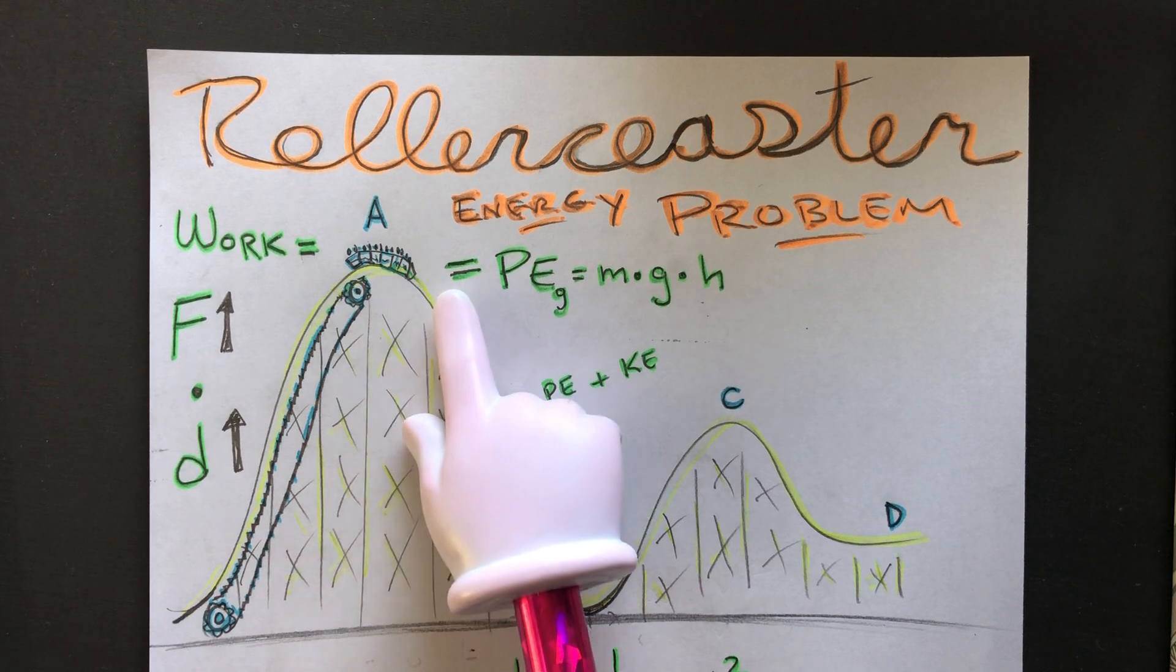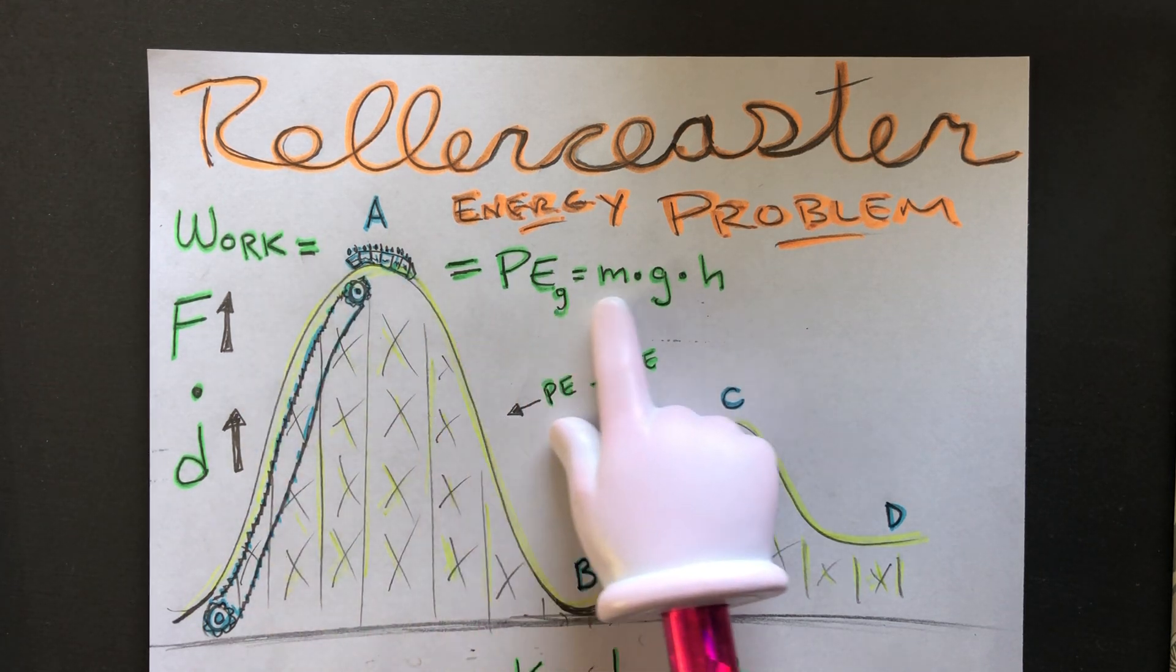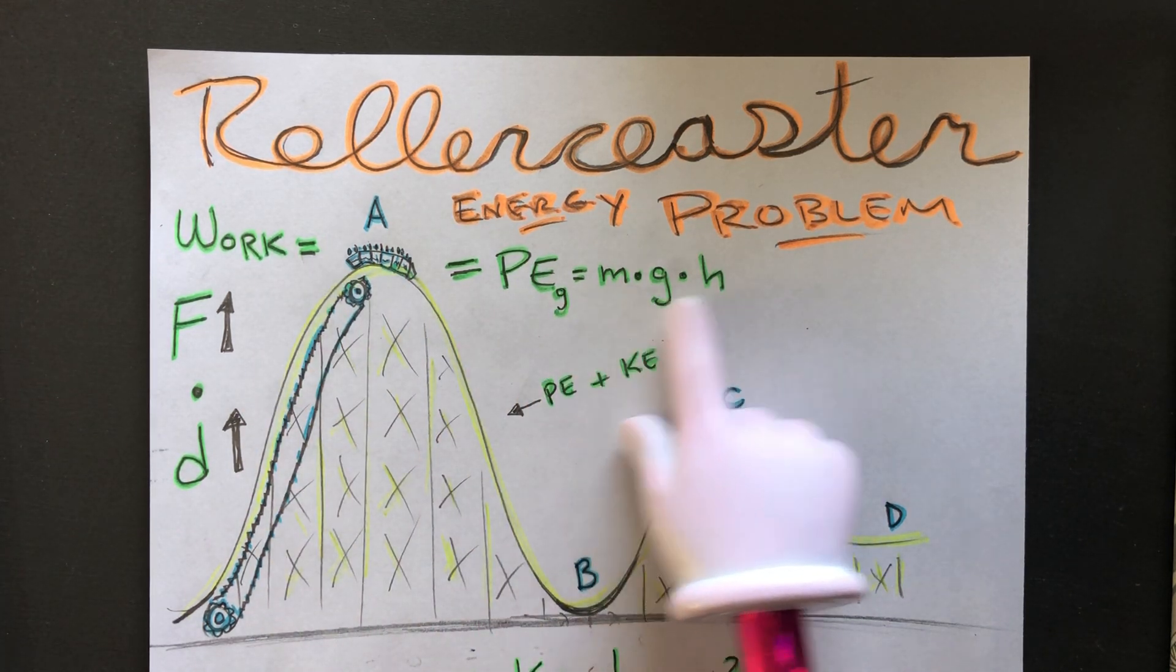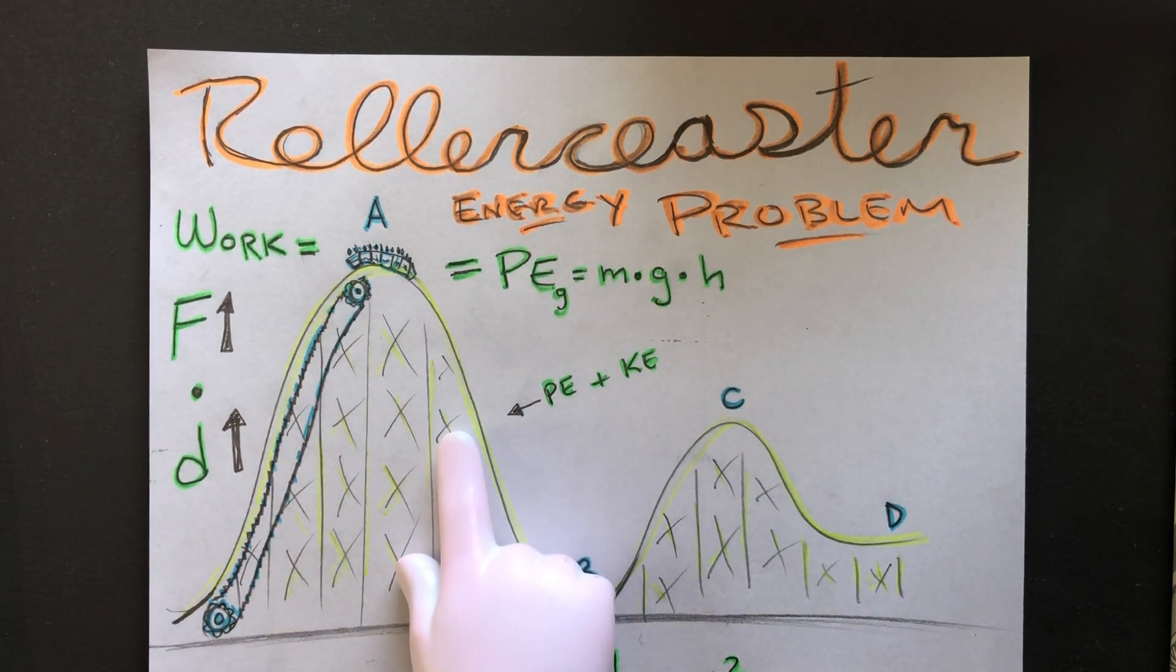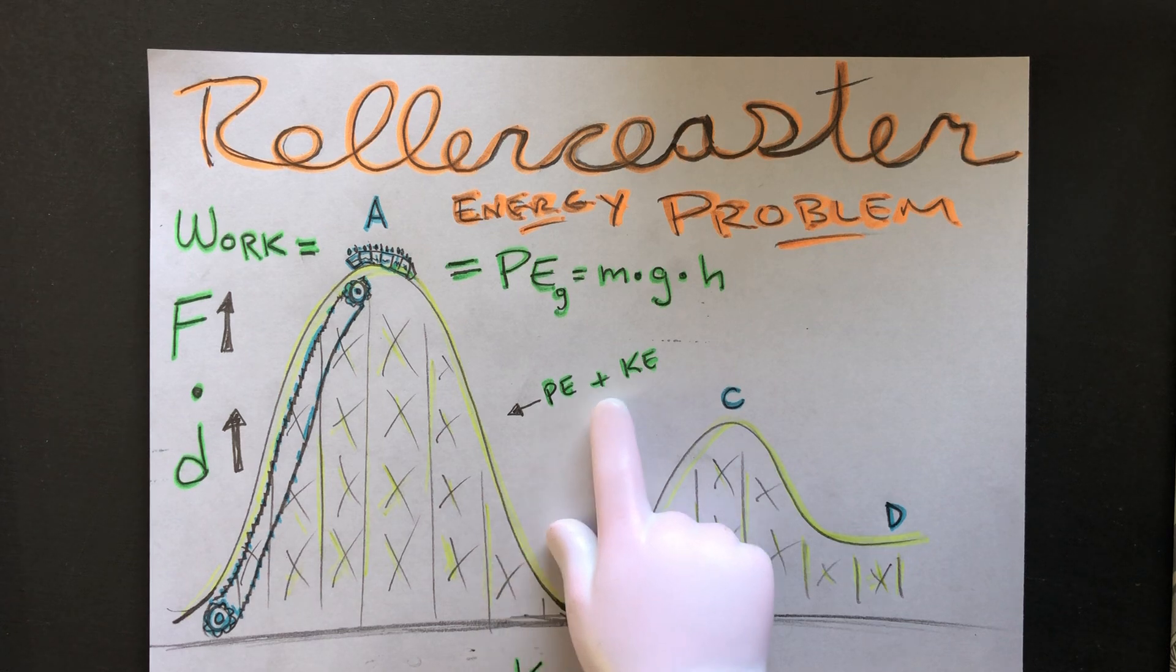Once it gets to the top it has all its potential energy, gravitational, which is mgh. These two are exactly the same. As the coaster goes down the track about halfway down it would be half potential, half kinetic. Potential would decrease, kinetic would increase.